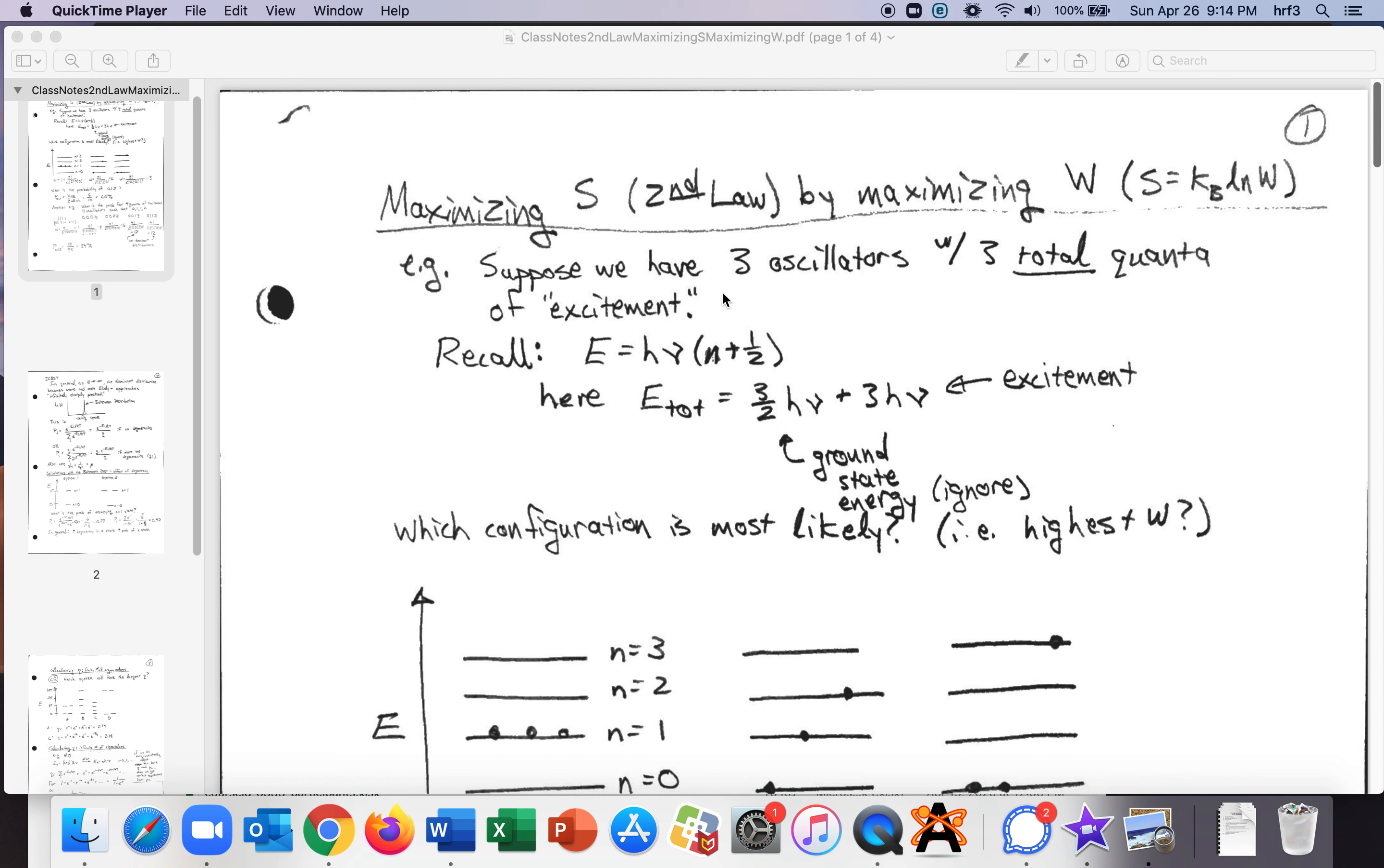So let's start small. Let's say we have three oscillators, so you can think of them as maybe three modes in a molecule or three diatomic molecules. But let's say we also have three total quanta of excitement. We know that the eigenvalues are E equals h nu times n plus a half. So the total energy, the ground state would be three halves of an h nu from three oscillators. And then excitement is h nu for our excitement because we know that the spacing between the energy levels is an h nu.